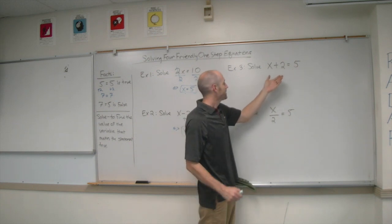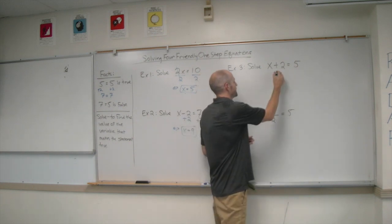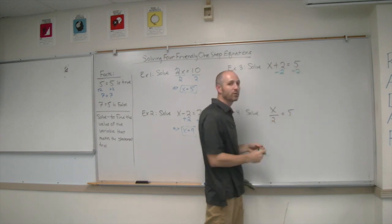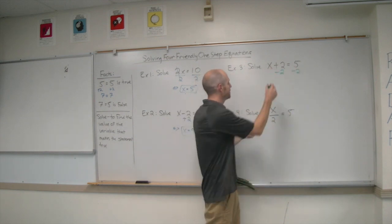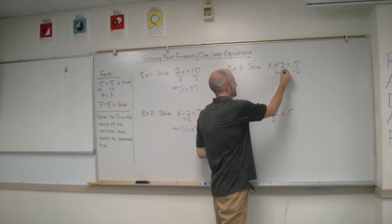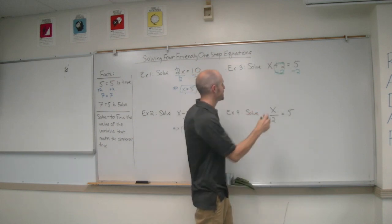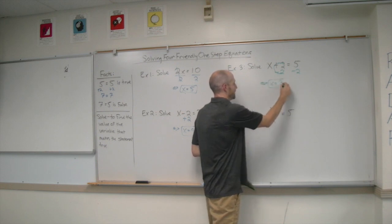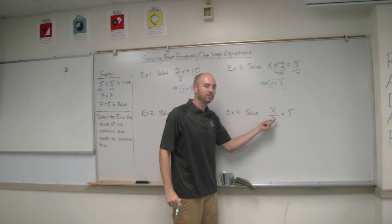Example three: a number plus 2 is equal to 5. This number must be 3. Using the properties of equality, we use subtraction — we subtract 2 from both sides of this equation. It works because positive 2 minus 2 makes zero, so this is how the 2 disappears from the left-hand side, giving us x is equal to 3.